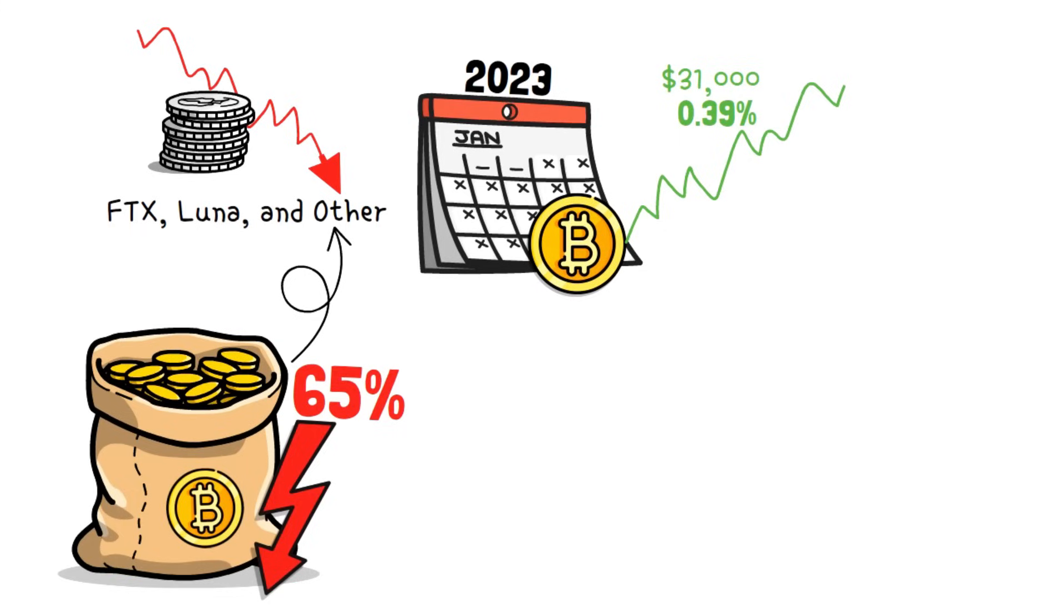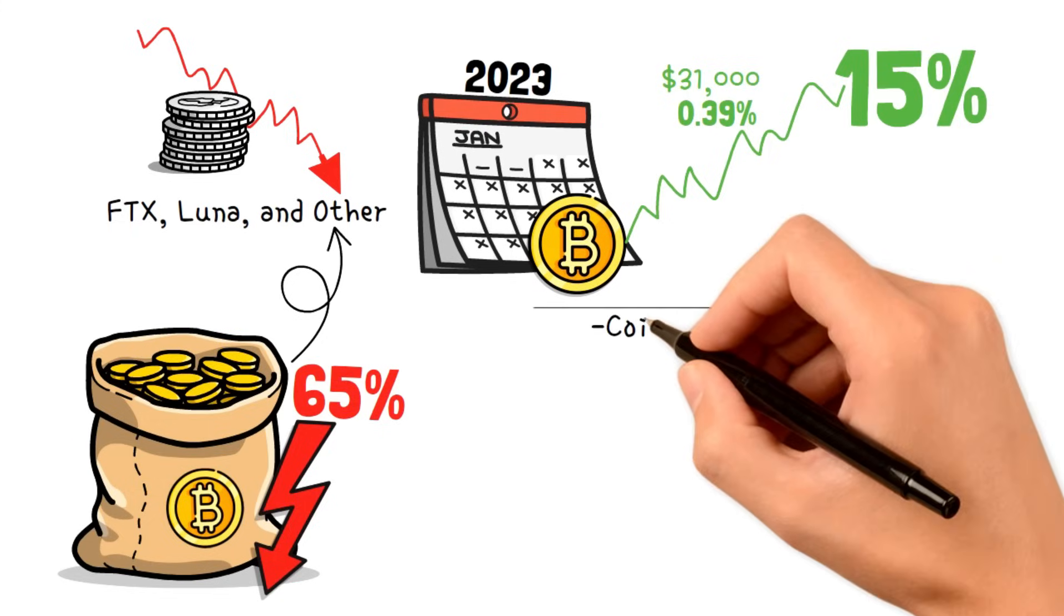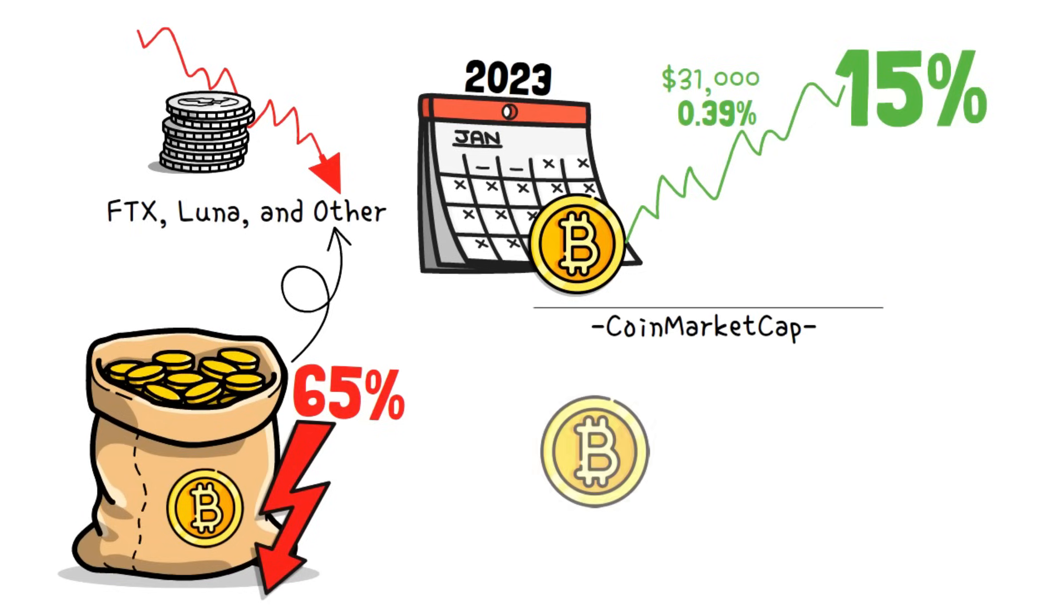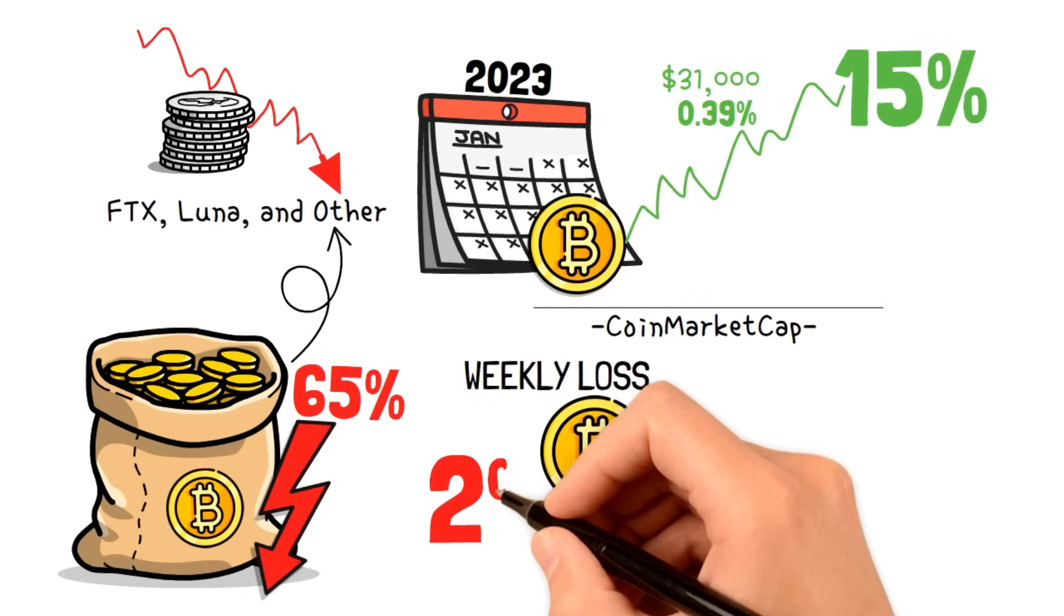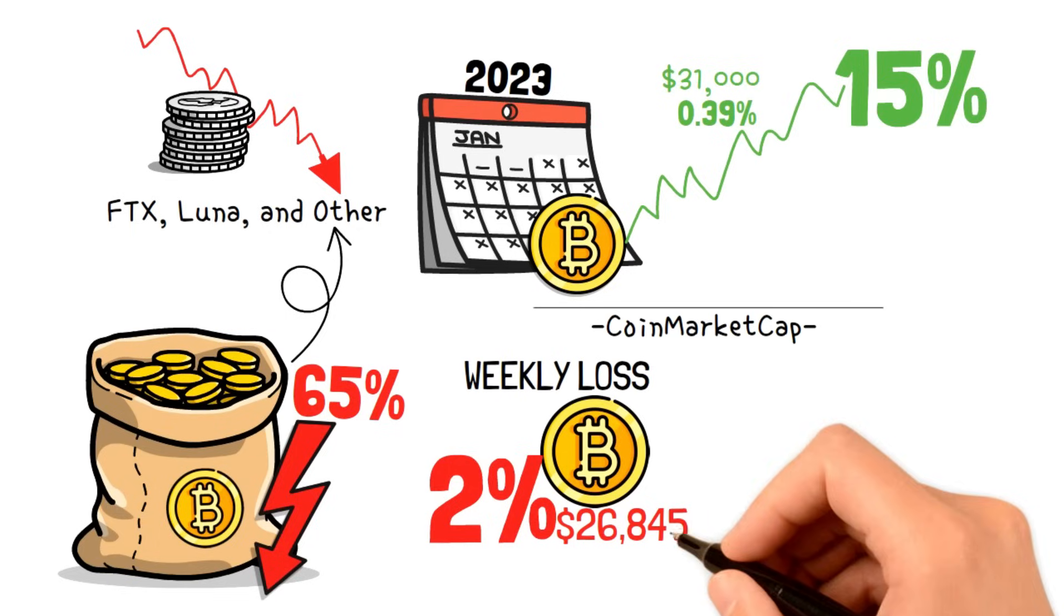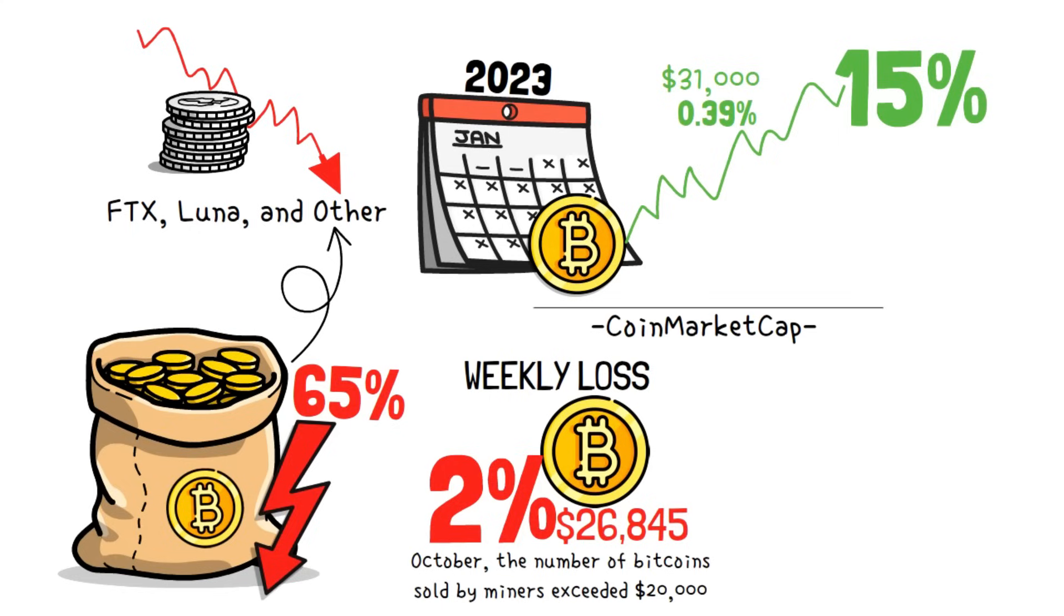And despite falling slightly below, it has recently been on a path to recovery with a monthly increase of almost 15%. Alas, according to recent charts from CoinMarketCap, Bitcoin is trading at a weekly loss of over 2% at $26,845. And to make things even more suspicious, in October, the number of Bitcoins sold by miners exceeded $20,000, marking a significant record since April 2023.